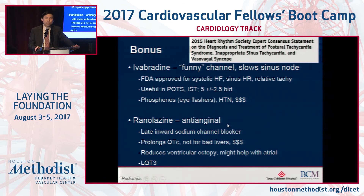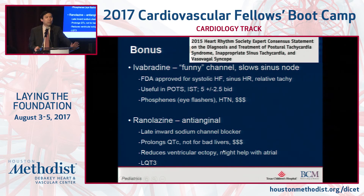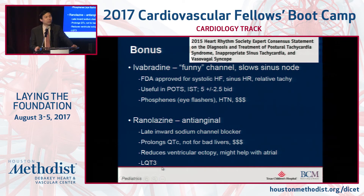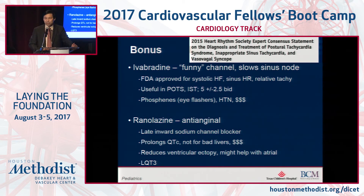Ranolazine — a lot of you will use that in coronary artery disease for your coronary cripple as a last-ditch antianginal. But it's also a late inward sodium channel blocker that mildly prolongs the QTc, and you shouldn't use it in very bad cirrhotics. It can be expensive if not covered for its FDA-approved indication of refractory angina. They found in trials that it suppresses ventricular ectopy, and others are now looking at it for suppressing atrial fibrillation and for long QT type 3. It may have some antiarrhythmic properties as new medications emerge.